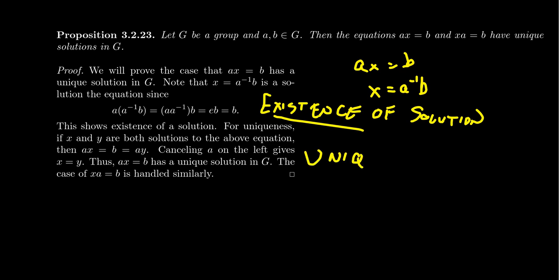So how do we get uniqueness of a solution? Why can't there be a second solution? Well, if there's a second solution, this is where cancellation is going to come into play. Say there's two solutions, both x and y. Well, if x is a solution, that means ax equals b. If y is a solution, that means ay equals b. But if they both equal b, that actually means that ax is equal to ay. By left cancellation, you're going to get that x equals y.